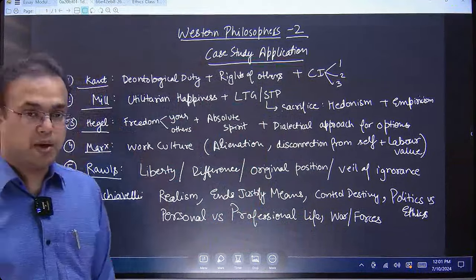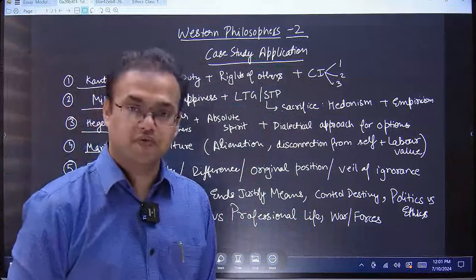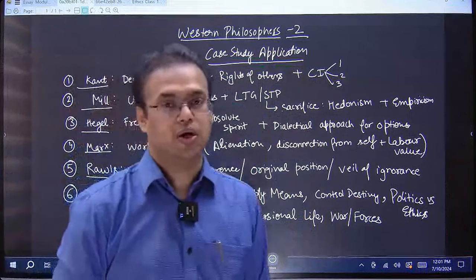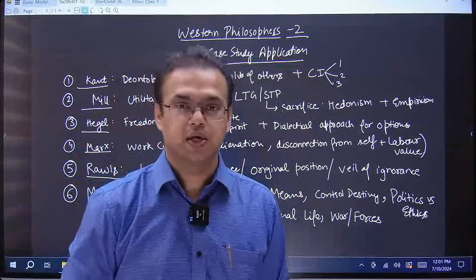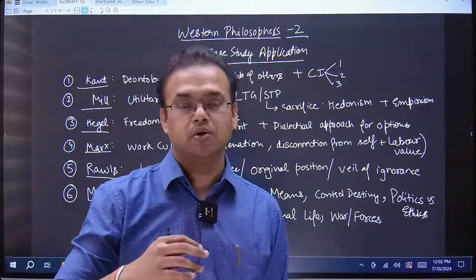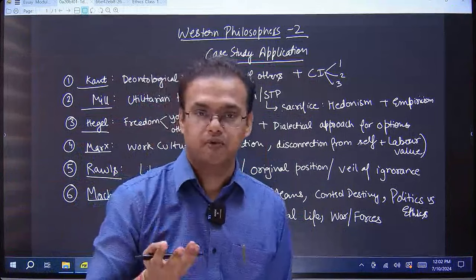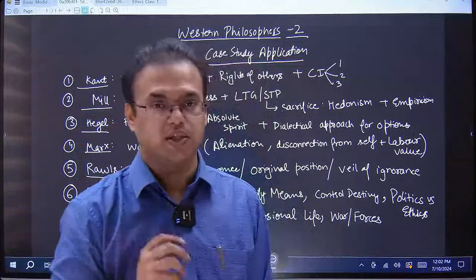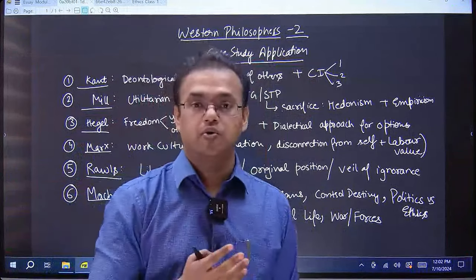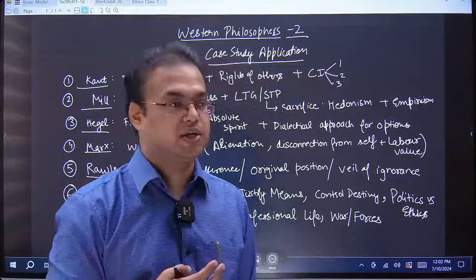There were categorical imperatives of Immanuel Kant which are very easy to use in your answers. CI 1 says anything that can become a universal law is ethical. For example, love is accepted as a universal principle and hence it is ethical, but hate cannot be accepted universally hence it is unethical.